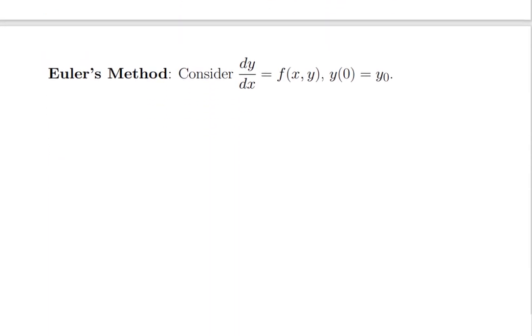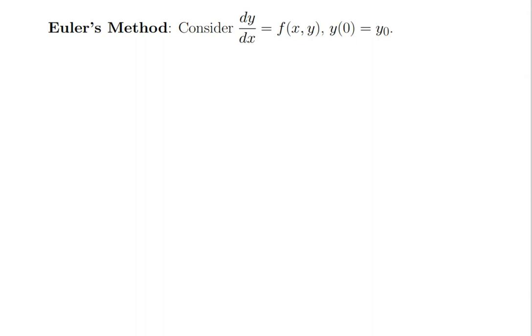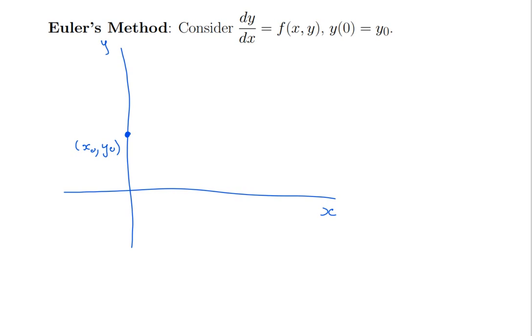The method we're considering is called Euler's method, invented in the middle of the 18th century by Leonard Euler. Working with a diagram: I've set y(0) = y0, so here's my starting value at x equals 0. The key point is that the differential equation — as we saw with the direction field — tells you what the slope of the solution is at each point. If I evaluate f of x0, y0, that tells me the slope of the solution. So the real solution must start out in that direction and then may curve away.